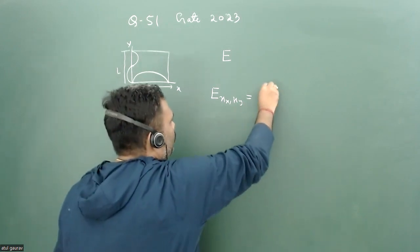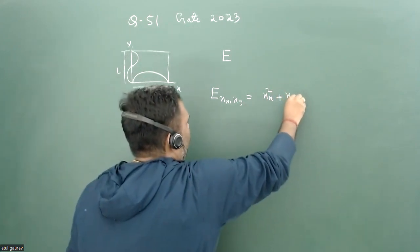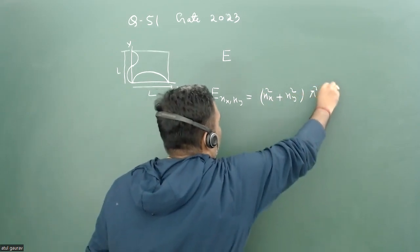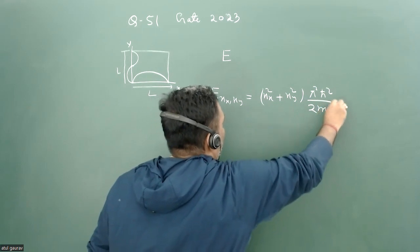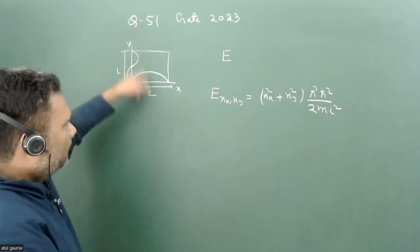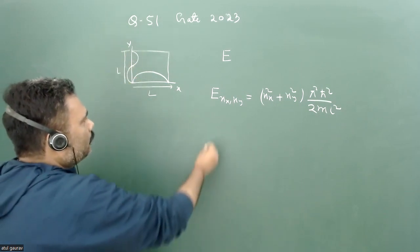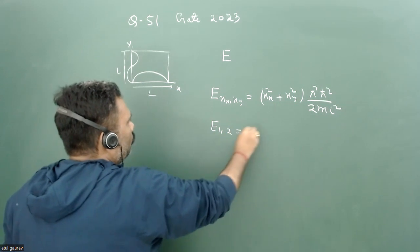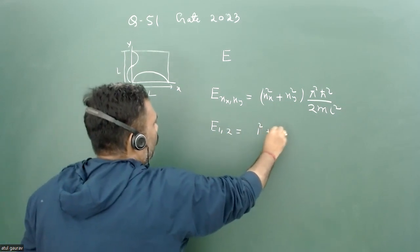And this is given by nx square plus ny square, and we have pi square h-bar square upon 2mL square. And for this particular mode it is given that we have E_{1,2}, that is 1 square plus 2 square and pi square h-bar square upon 2mL square.